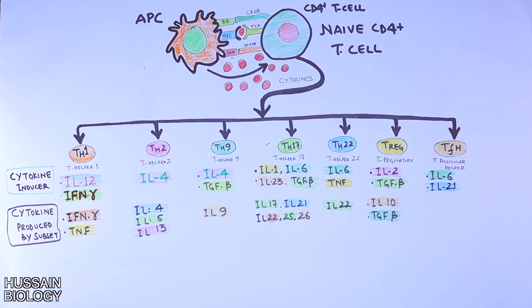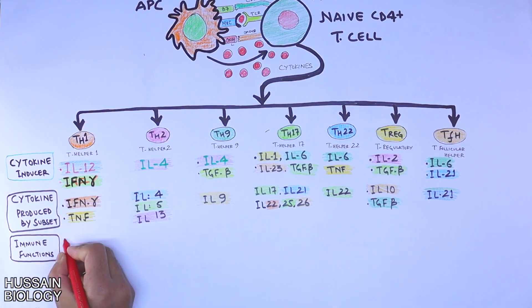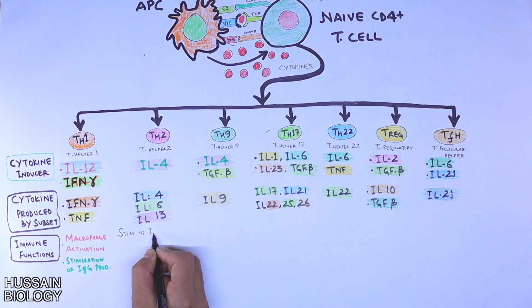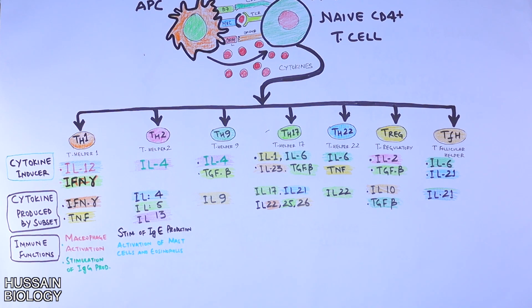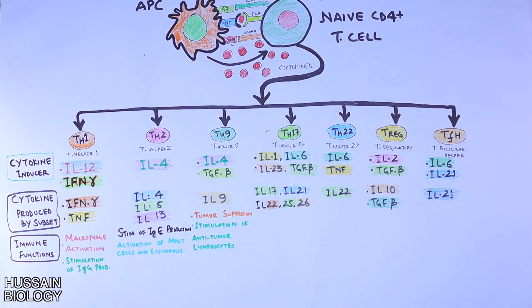Now let's see the immune functions of these different subsets. TH1 performs macrophage activation and stimulation of IgG production. TH2 stimulates IgE production and activates mast cells and eosinophils.